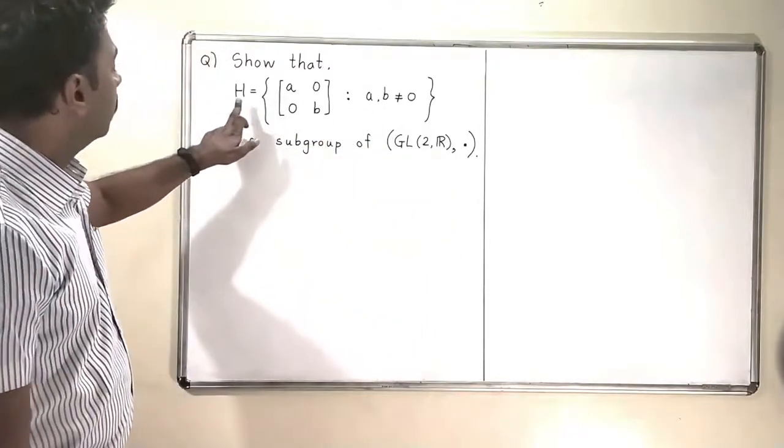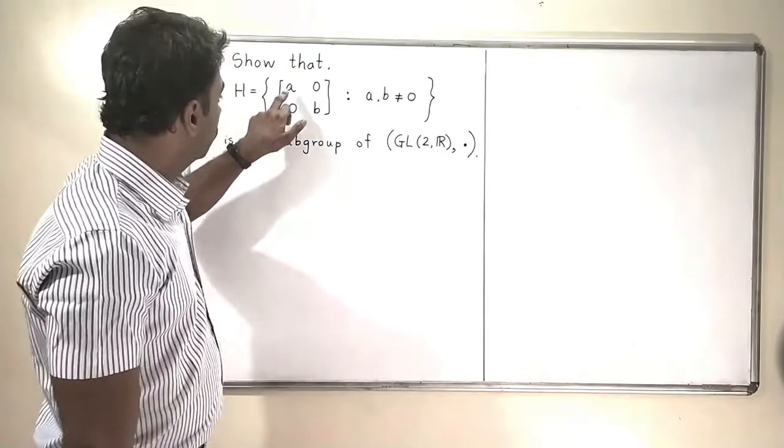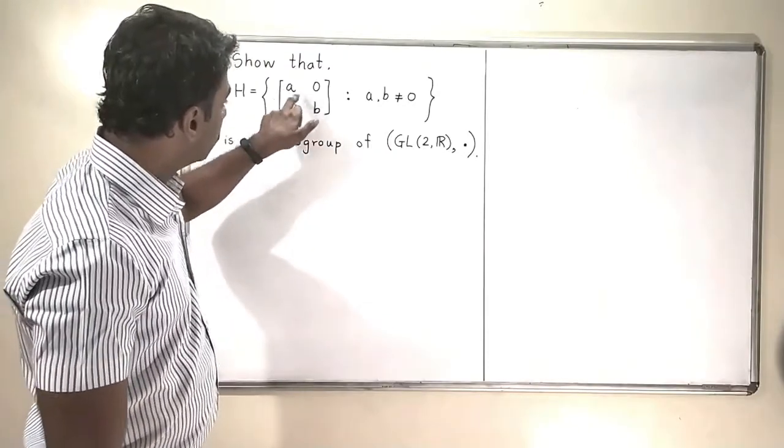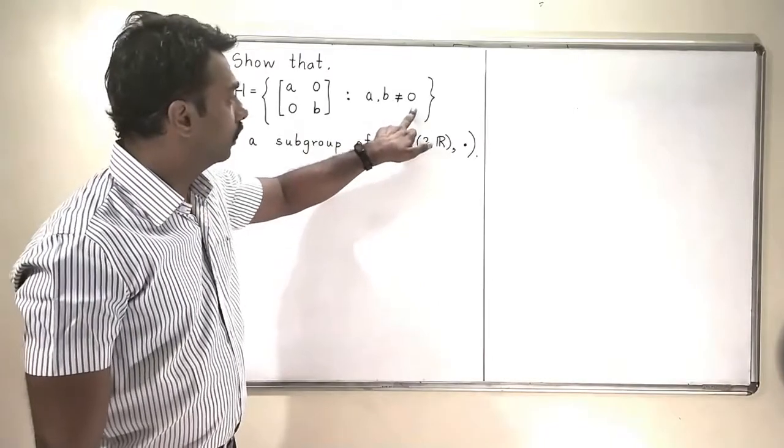Now, what is that set? That set H is the collection of all matrices which have diagonal entries A and B, and both those entries are not equal to 0.